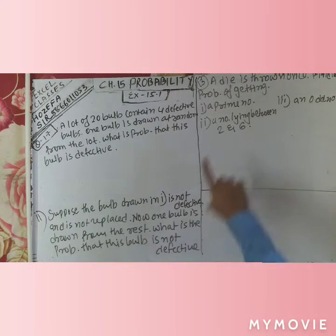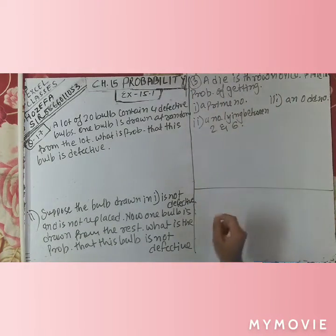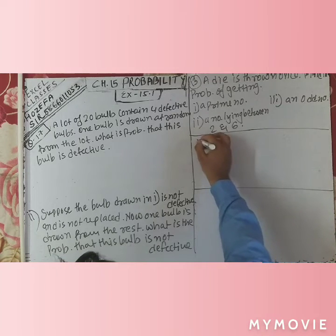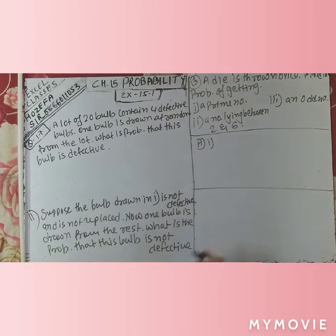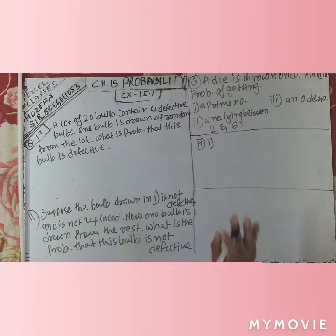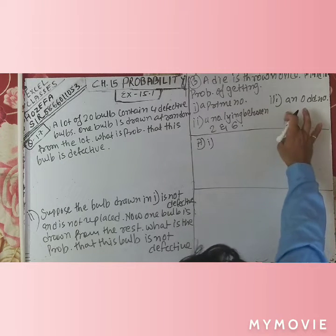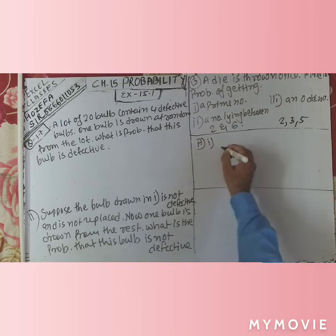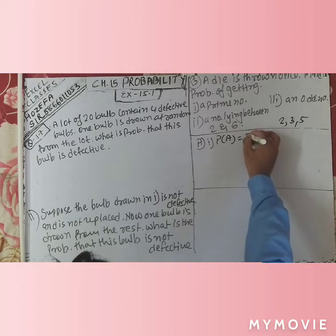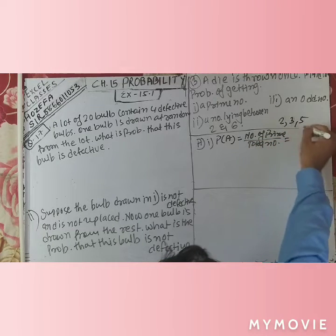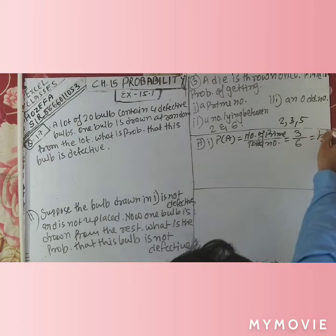Now question number 13: a die is thrown once. A dice has 6 numbers total. What is the probability of getting a prime number? The prime numbers from 1 to 6 are 2, 3, and 5 — note that 1 is neither prime nor composite. So there are 3 prime numbers. P = number of prime numbers upon total numbers = 3 upon 6 = 1 upon 2.